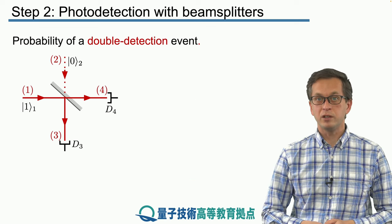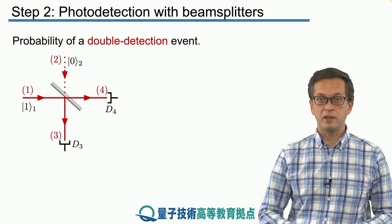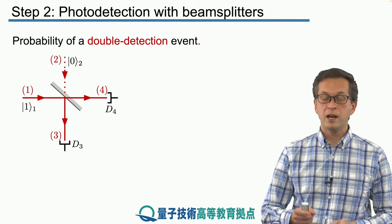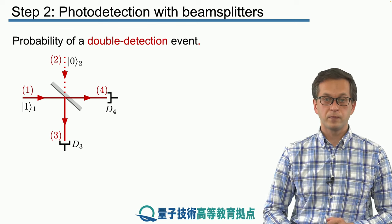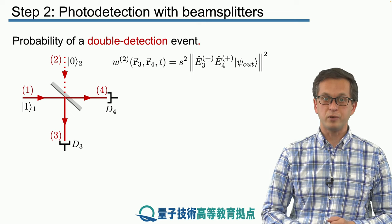Now we ask the same question as we did in the last lesson. What's the probability of a double detection event at the same time? In other words, a coincidence count where both detectors D3 and D4 give us a click. And we know how to do that.